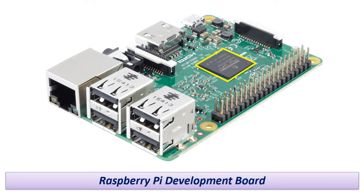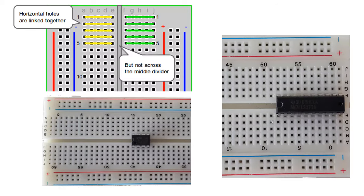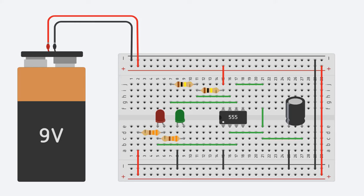When integrated circuits are to be used on the breadboard, they are inserted right in the middle. Thus, any of the pins can be used separately without short-circuiting. For example, here you see a simple circuit built on a breadboard with a 555 timer IC.